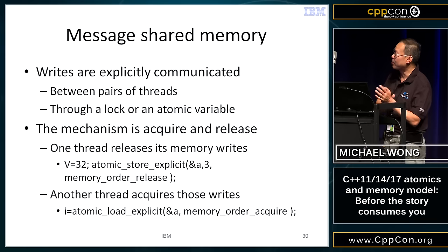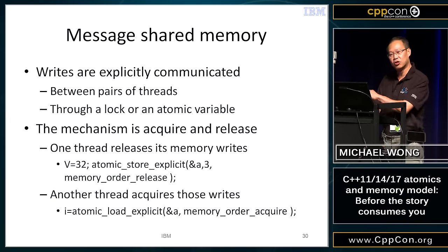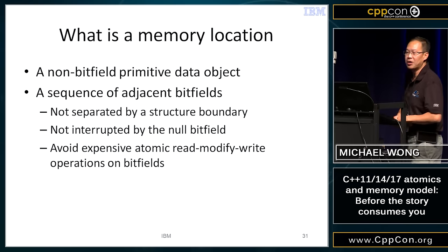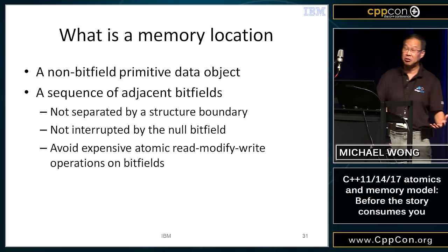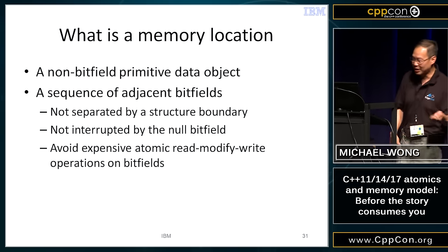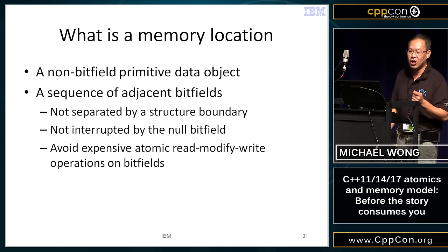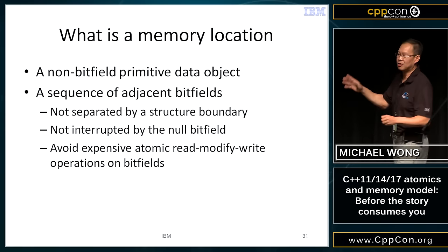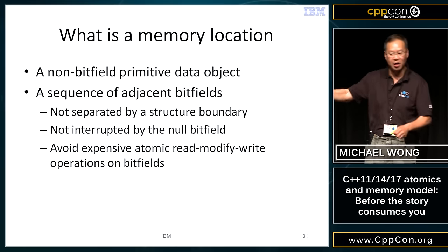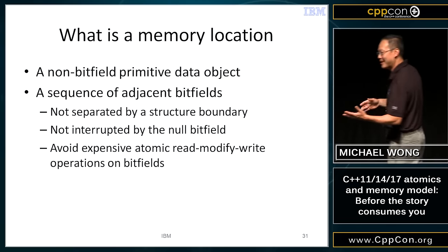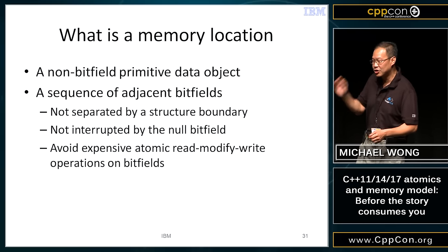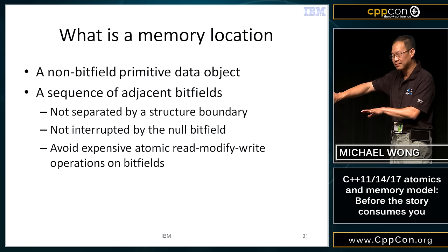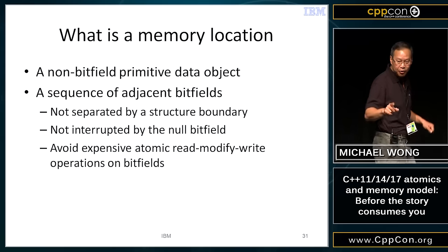One of the first things we did was specify what a memory location is — it wasn't that easy. The main gotcha had to do with bit fields. Adjacent bit fields in a struct are in a single memory location unless they're separated by a zero-bit bit field, which allows them to be separated to the next container boundary. The compiler won't do that for you.